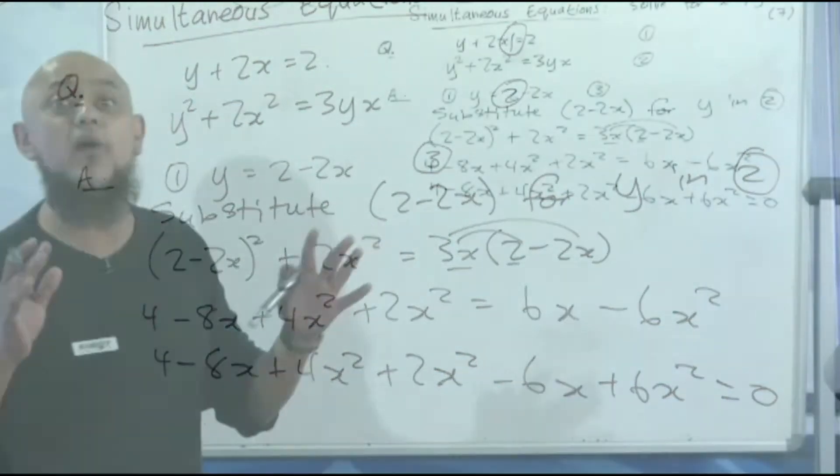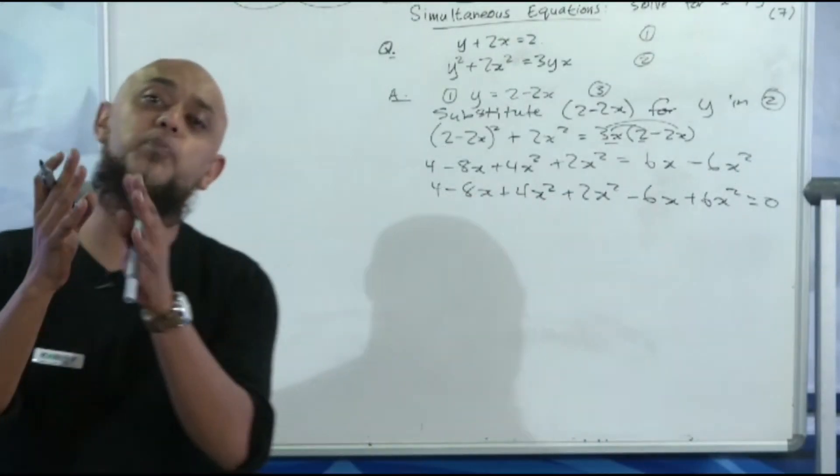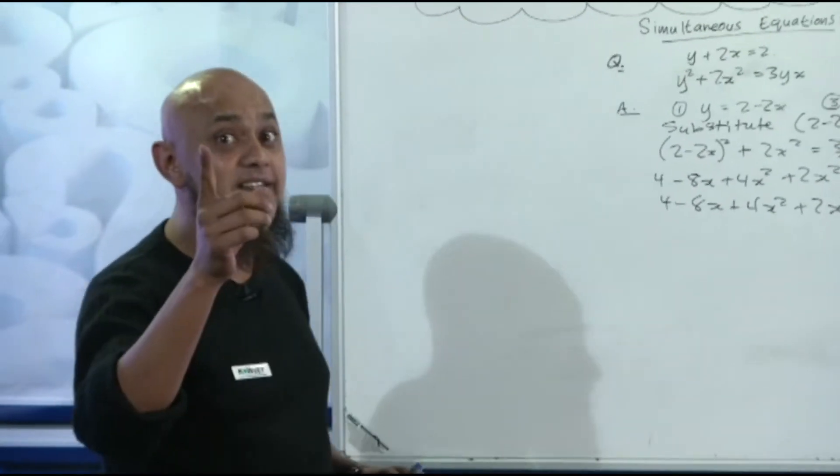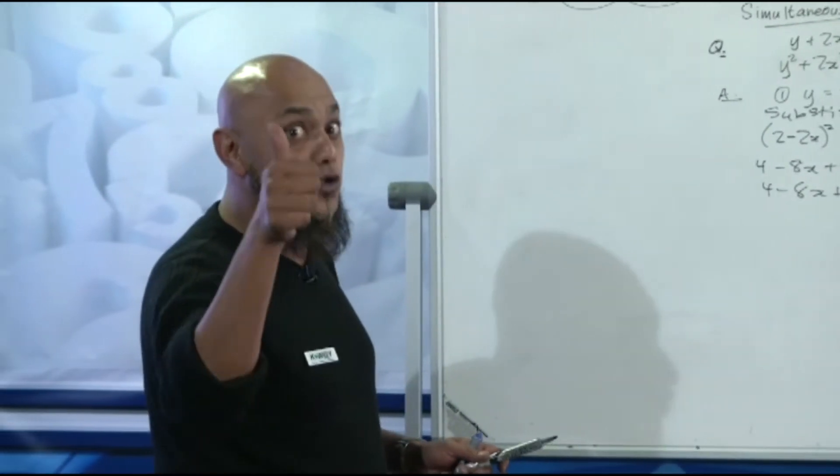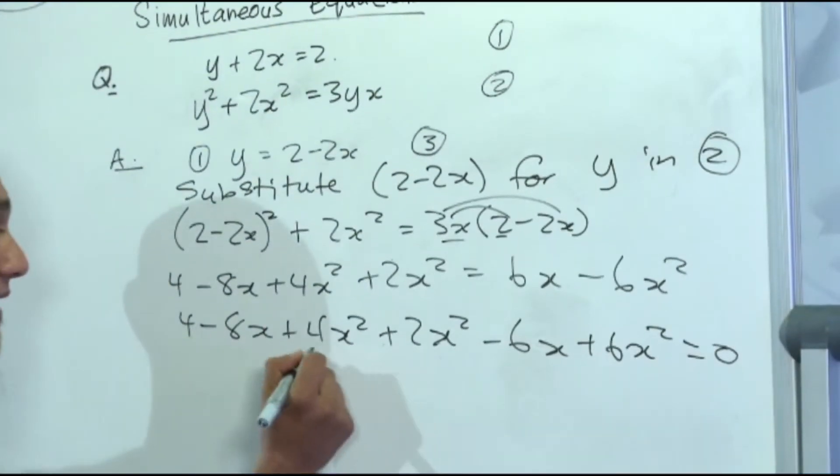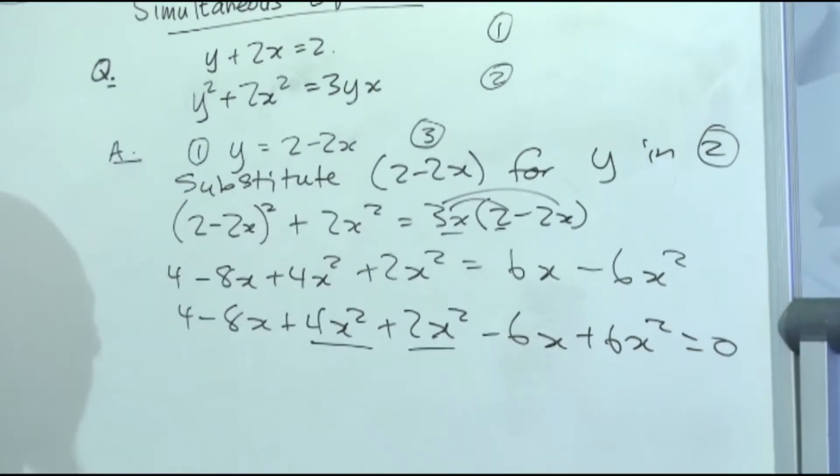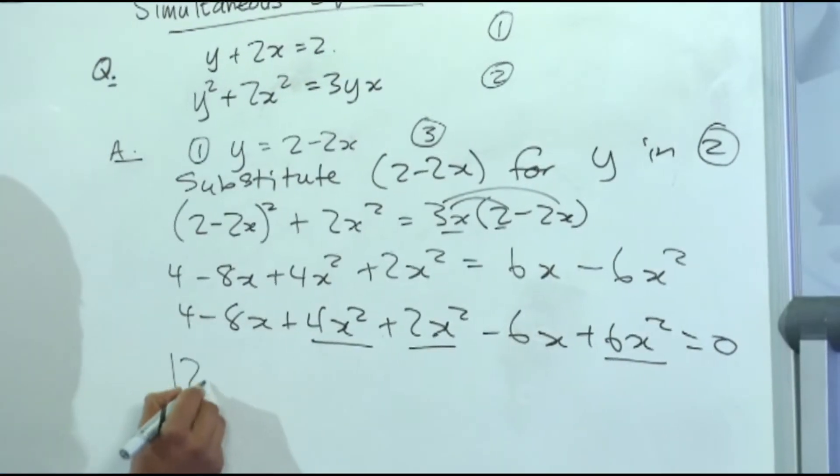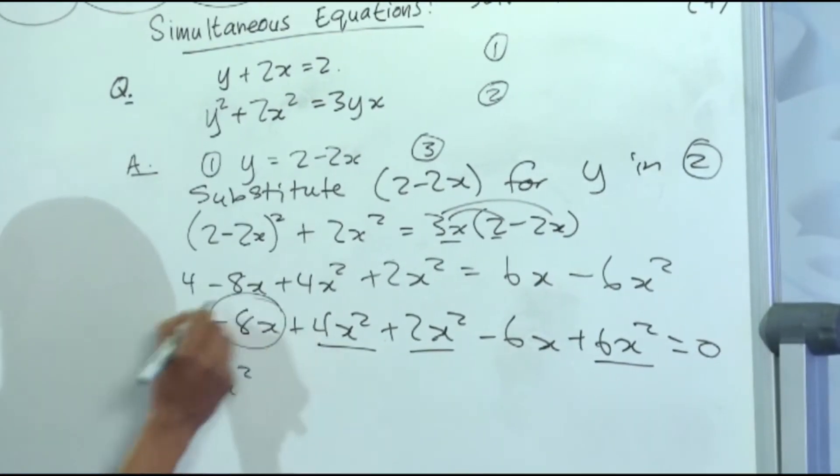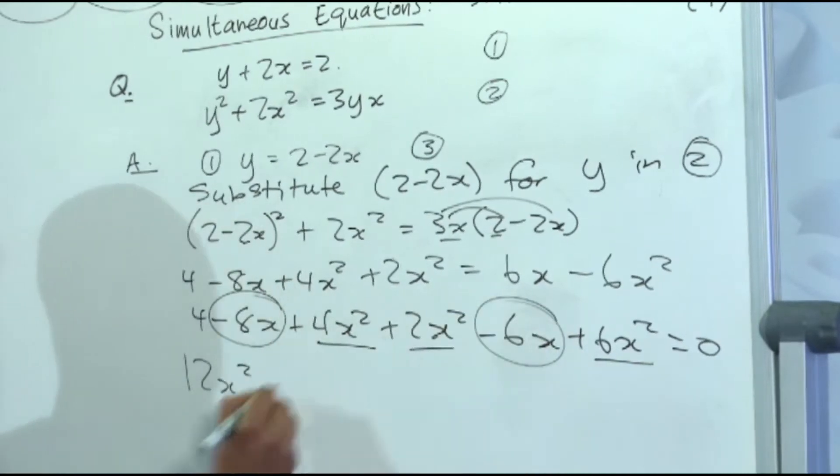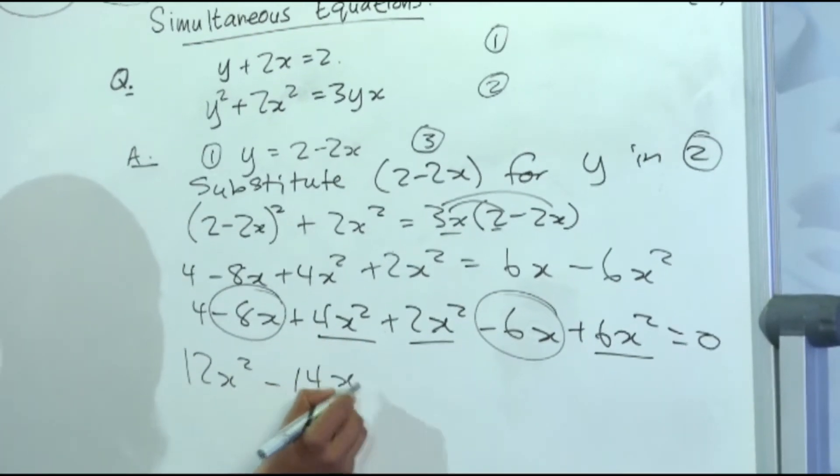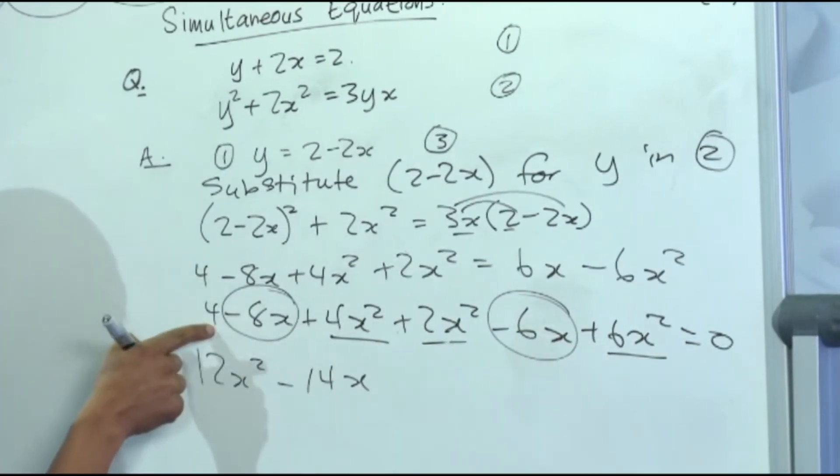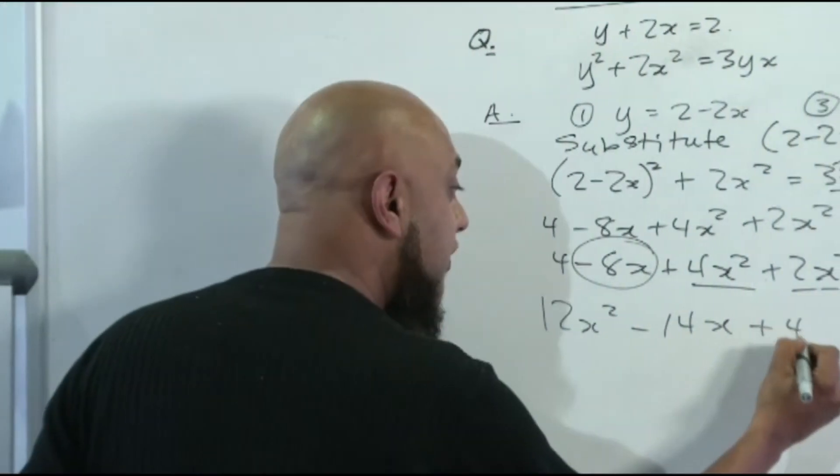4 minus 8x plus 4x squared plus 2x squared minus 6x plus 6x squared is equal to 0. We're now going to collect our like terms and we are going to pray that we get a perfect trinomial. Because what did I say? Once you get a perfect trinomial, you know you're right. So let's collect our like terms. 4x squared plus 2x squared, 6x squared. 6x squared plus 6x squared, 12x squared. I've got minus 8x here, I've got minus 6x here, I get minus 14x. So I'm done with my x squareds, I'm done with my x's, and I'm only left with 4. Plus 4 is equal to 0.